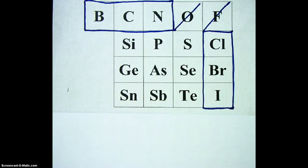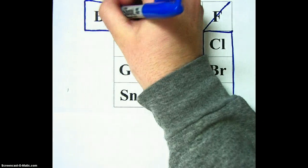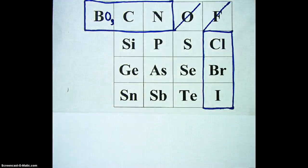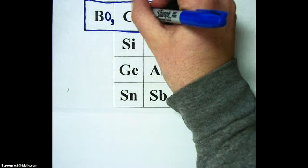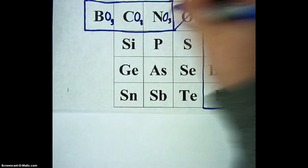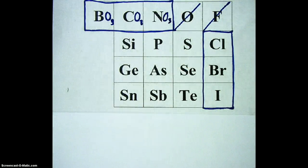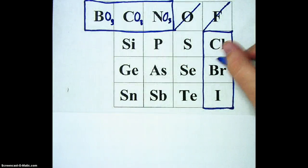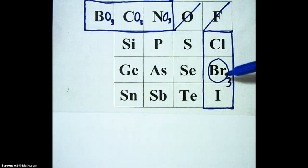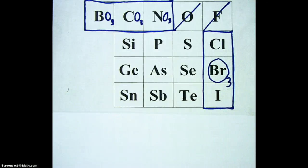When these six elements form a polyatomic ion, they have three oxygens. I'm going to represent that by putting an O3 behind each one: BO3, CO3, NO3. And then I'll do the same thing over here — I'm just going to put a big O3, meaning ClO3, BrO3, and IO3.